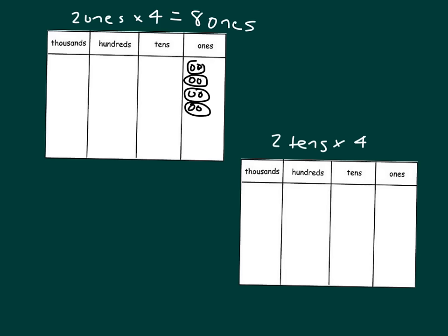When we look at two tens times 4 and model that within our place value chart, there's two tens there, but it's two tens times 4. That's two of them, three of them, and that is four of them. Two tens, one, two, three, times 4, which is equal to two, four, six, eight, or eight tens.